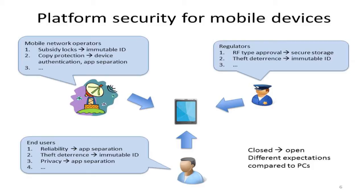Enforcing SIM locks meant there was a need for an immutable identifier for every device, so that a phone with a given identifier could be bound to a specific subscription. You could change to another SIM from the same operator, but not to a SIM from a different operator. Operators also got into the business of selling content — starting about a decade ago with ringtones.